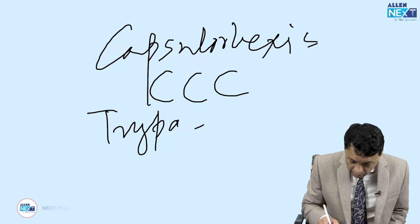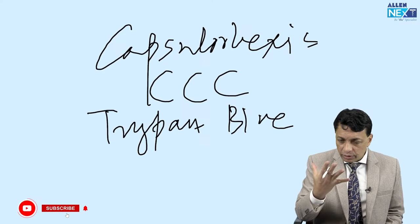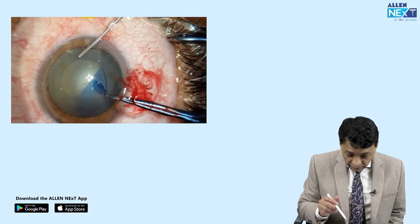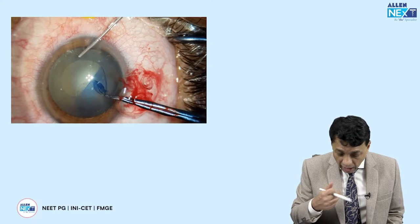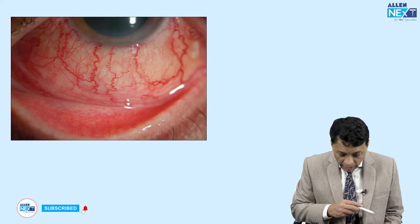The blue dye you see is called trypan blue. You have to remember this name — it's been increasingly asked of late. We use trypan blue when we have mature cataracts where there is no retroillumination glow against which you can see the capsule. Here there is no glow, so we stain the capsule with trypan blue to make it visible. This is capsulorhexis performed with trypan blue in a mature or hard cataract where retroillumination glow is blocked.